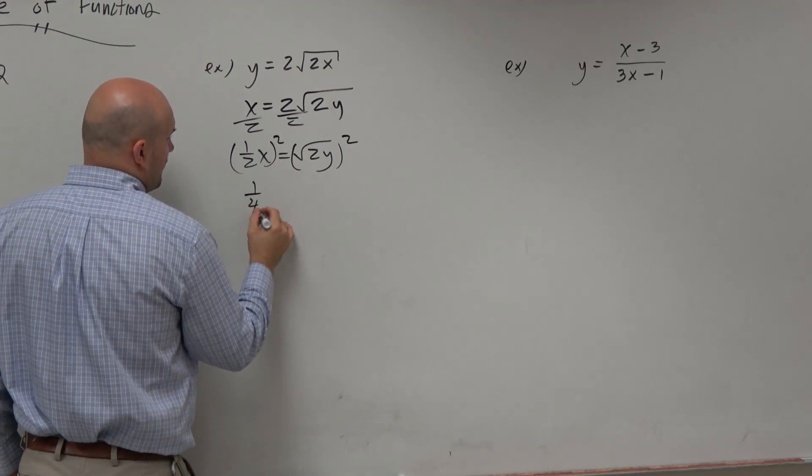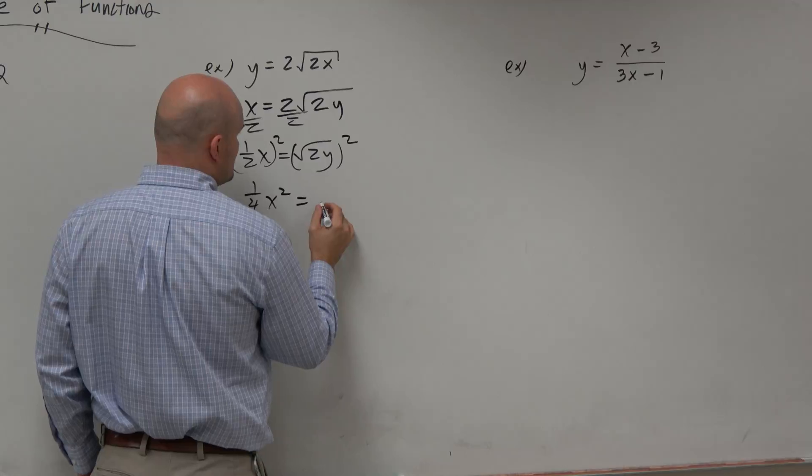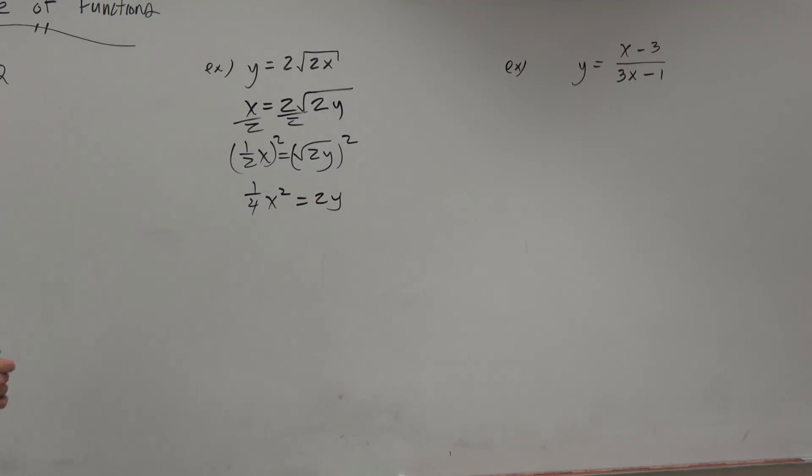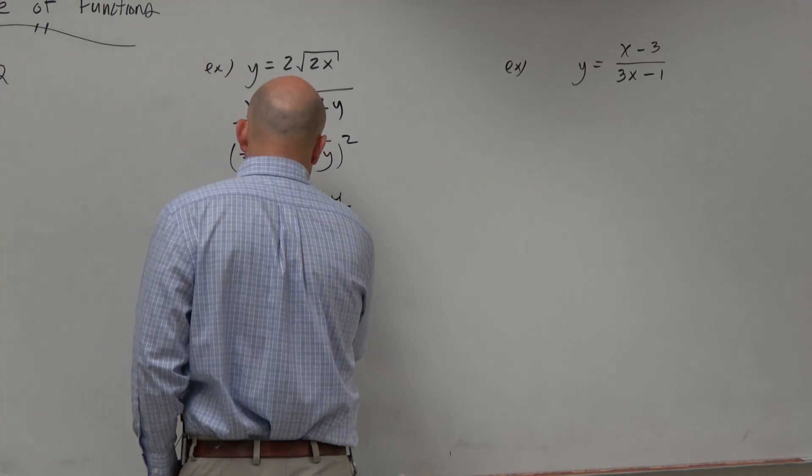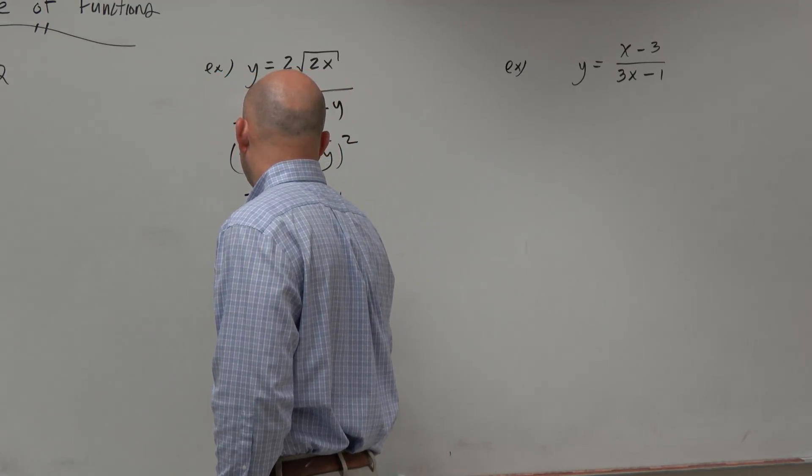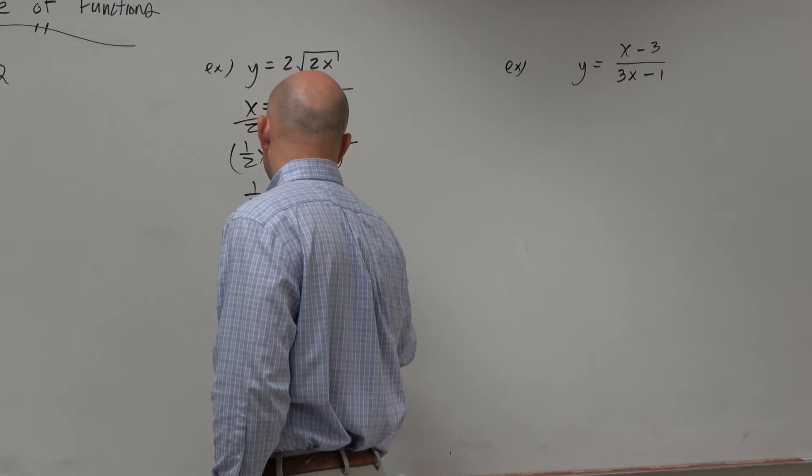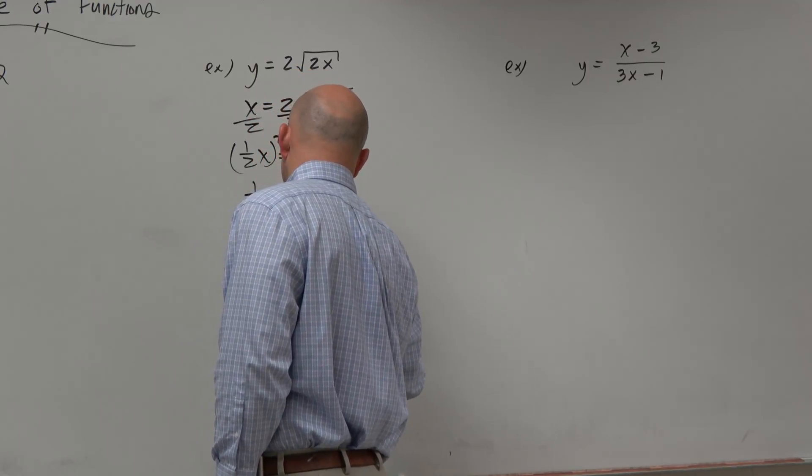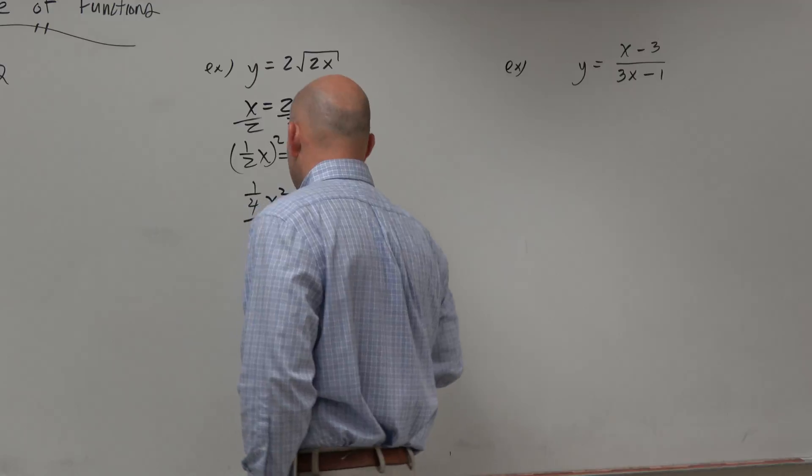So therefore, that's 1 fourth x squared equals 2y. Then we can divide by 2. And therefore, we have 1 eighth x squared equals y. So y inverse equals 1 eighth x squared.